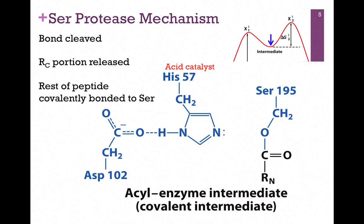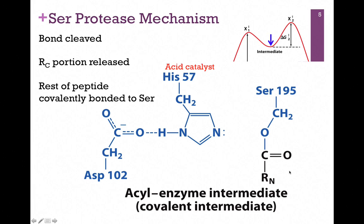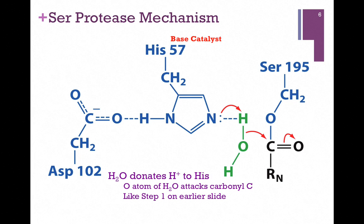Here's the resolved structure — we've actually accomplished our goal of breaking the bond and released the C-terminal portion of our peptide. But now we have the rest of our peptide covalently attached to our serine residue. Looking at our reaction diagram, this is the valley between our two hills — we've formed that covalent bond. The histidine is back in its original form, but now we have a covalent intermediate, a covalent attachment between the enzyme and the substrate. We have to resolve the structure before we're finished.